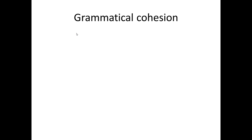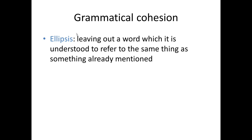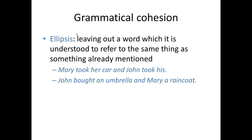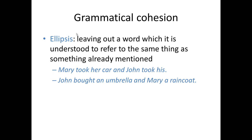The last type of grammatical cohesion we're going to look at is called ellipsis. Ellipsis means leaving a word out altogether because it's understood to refer to the same thing as something that's already been mentioned. 'Mary took her car and John took his.' John took his what? His car. Leaving out the head of the noun phrase is a way of indicating that we need to look to the previous clause to find out what it's meant to be. Another example: 'John bought an umbrella and Mary a raincoat.' Leaving out the verb 'bought' is a clue to look to the previous clause to find out what the verb is meant to be.